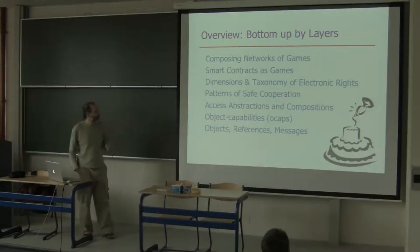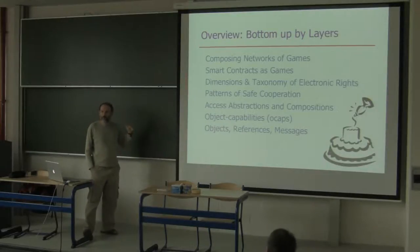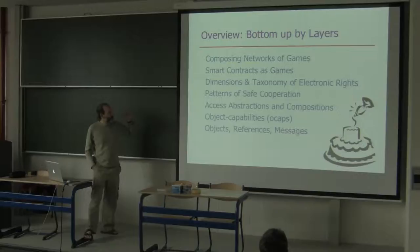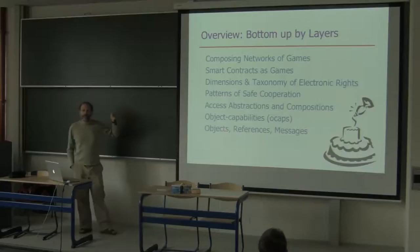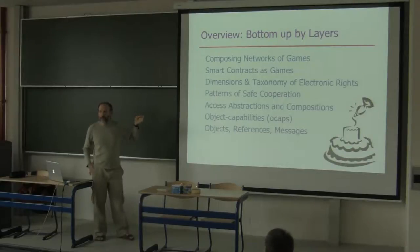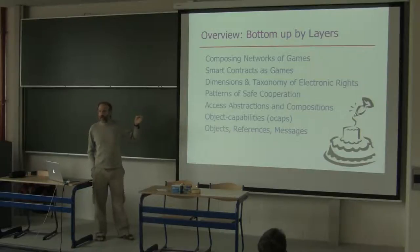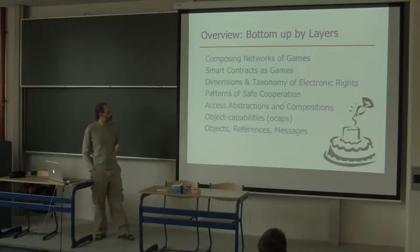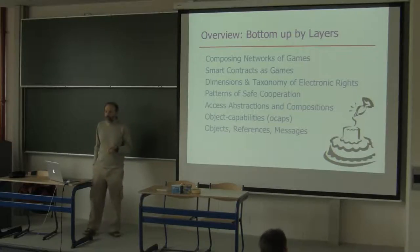We'll start with a brief overview of the foundations of objects, references, and messages — stuff that should already be familiar. Then how we build object capability security out of that. Next level up: I'll present the use of object capabilities to express access abstraction — a new fourth fundamental kind of abstraction mechanism, alongside the familiar procedural, data, and control abstraction — and talk about some of the logic by which these abstractions compose.